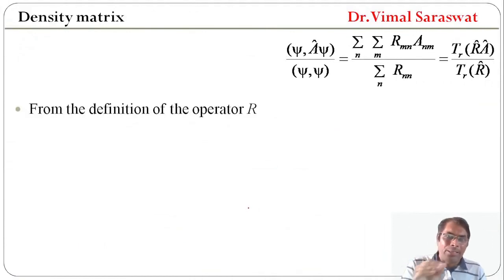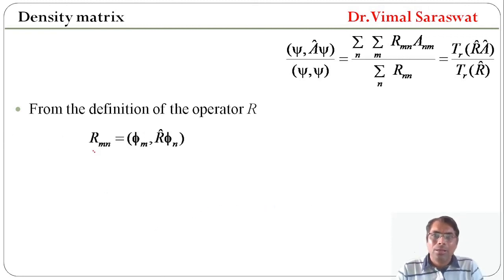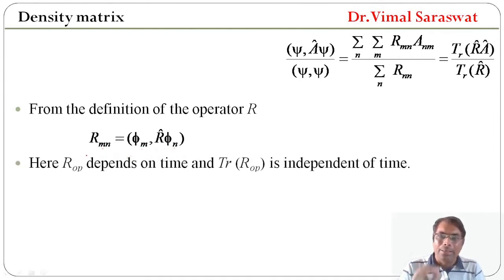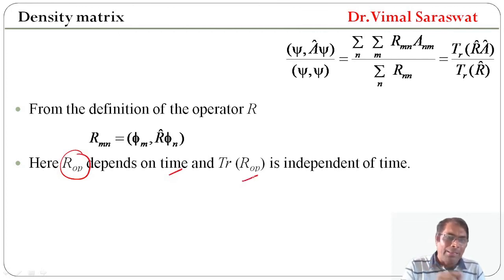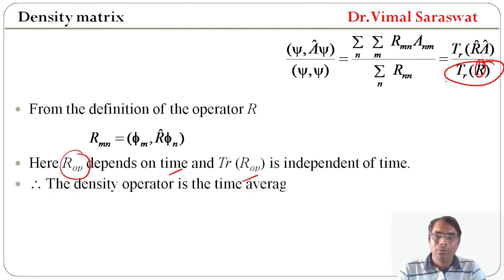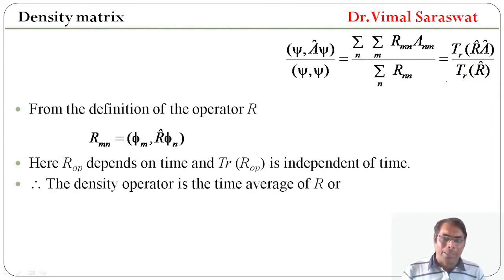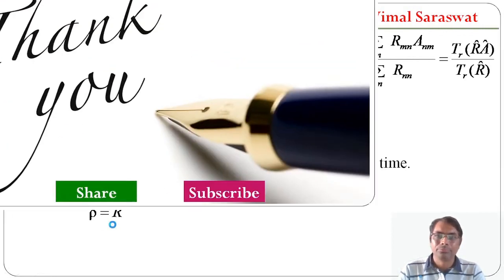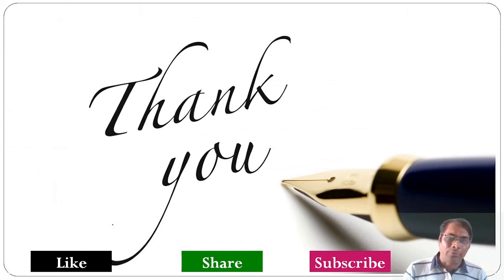From the definition of operator r, r_mn equal to <phi_m | r | phi_n>. Operator r depends on time, but trace of operator r is independent of time. Therefore the density operator is the time average of r: rho equals r-bar. In today's session of statistical mechanics we have discussed about density matrix.